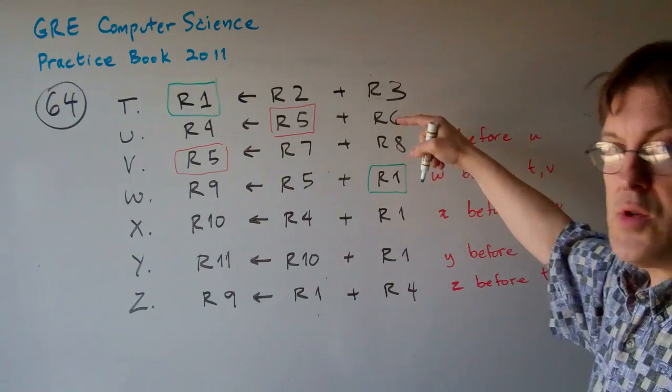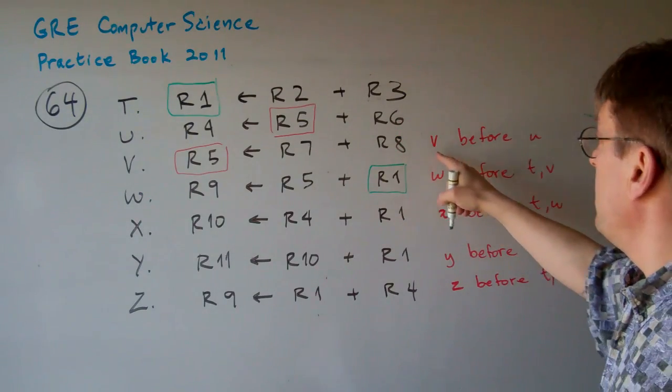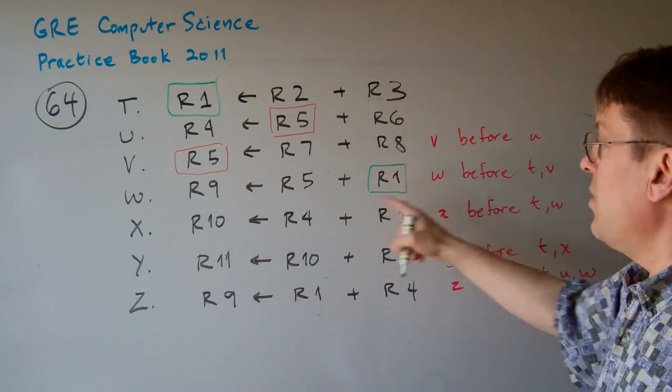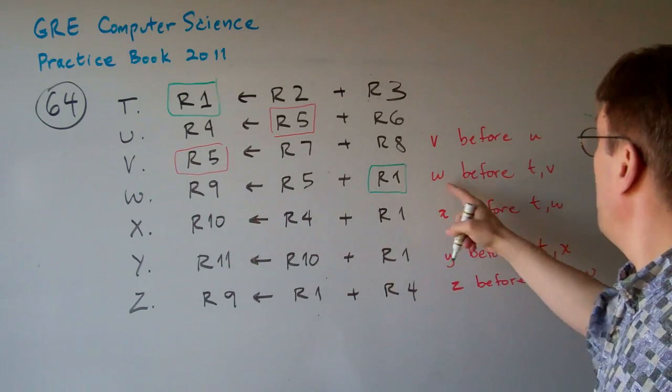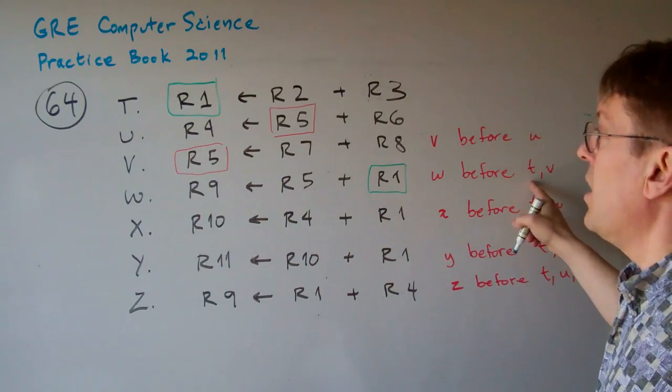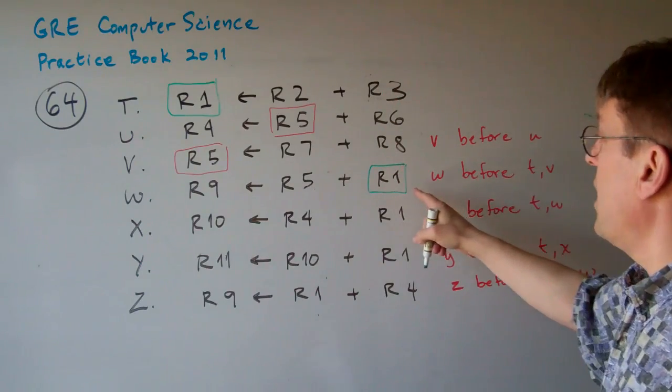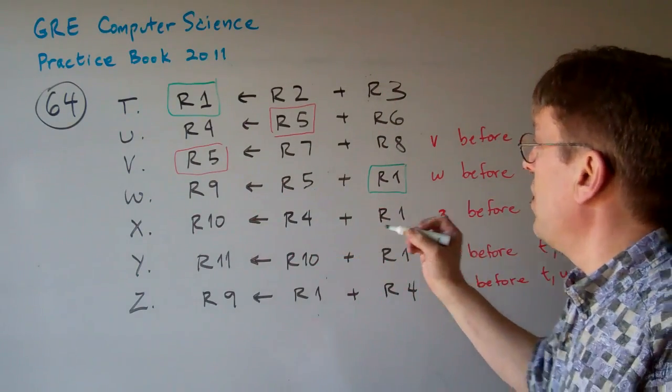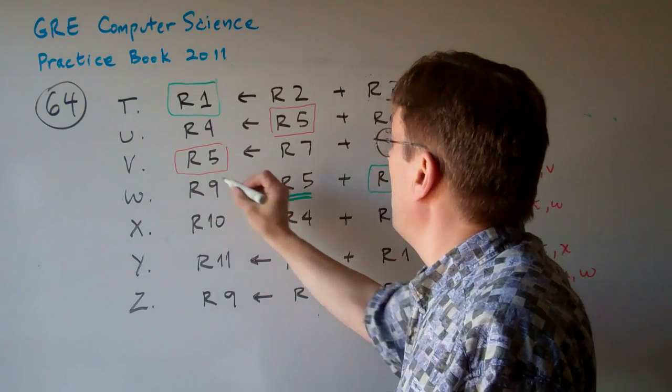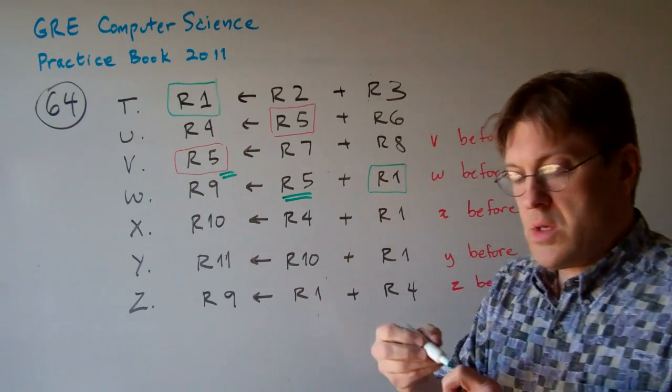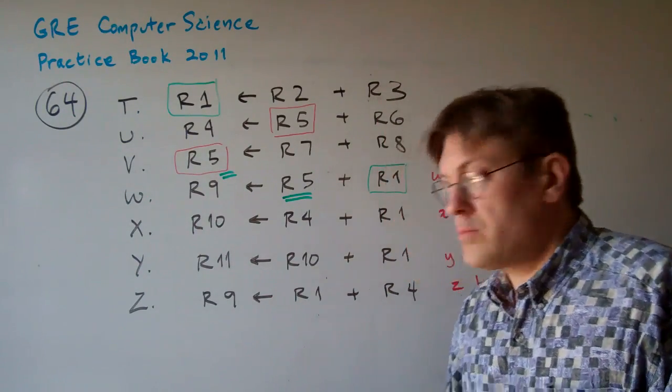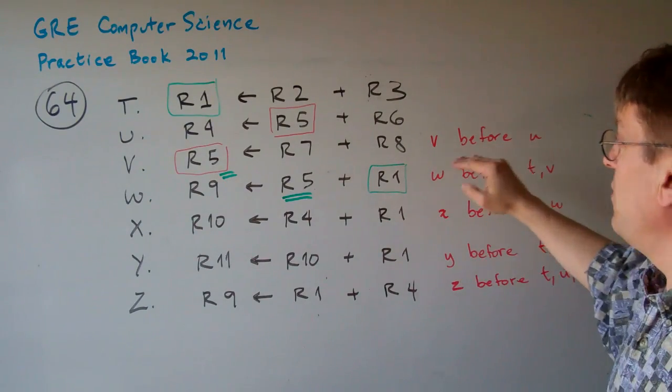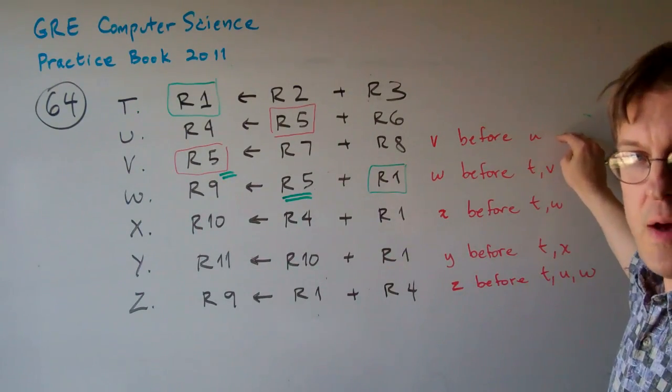I just went through each one of these sentences and said, well, V could be a problem if the V came before the U. And W could be a problem if the W came before either a T or a V. If it came before a V, you see that R5 is the problem. So, you can go through these particular things. But basically for V, V cannot come before U.